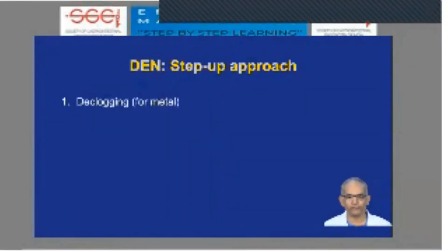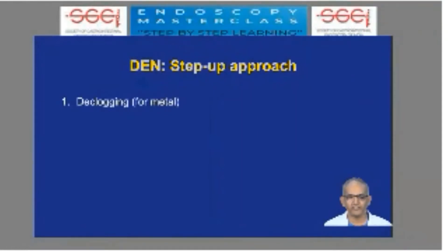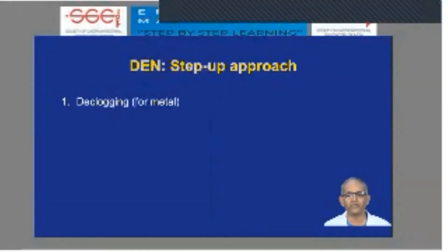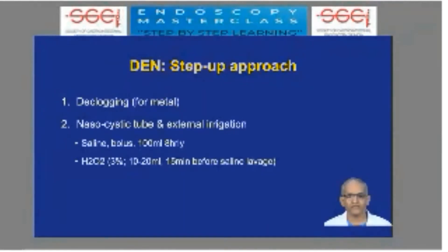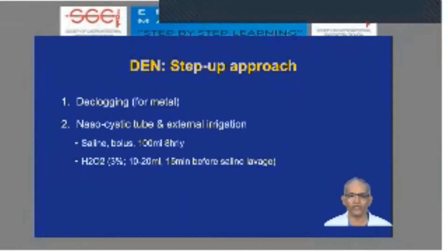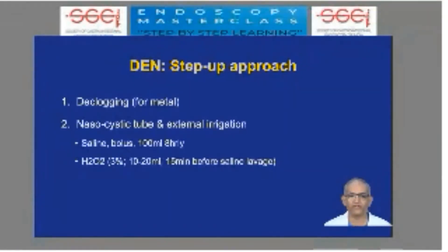The step-up approach for direct endoscopic necrosectomy begins with declogging any dead tissue or debris blocking the fistula created between the stomach and the cavity. Declogging is generally required for metal stent placement, but can also be required in patients with upfront plastic stents. The second step is liberal use of a nasocystic tube for external irrigation — we use 100 ml of saline as a bolus every 8 hours for 2 to 3 days between sessions.